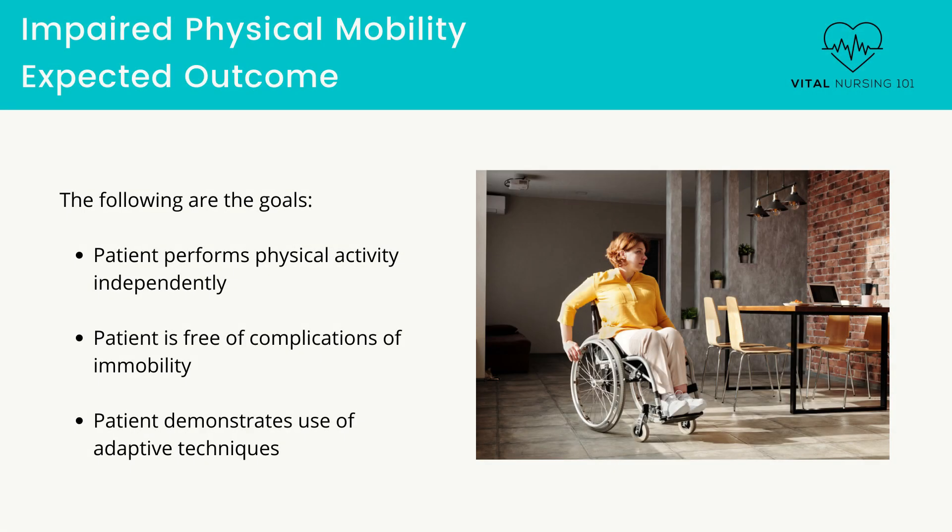What is our goal for the patient? The patient performs physical activity independently or within limits of amputation. The patient is free of complications of immobility, as evidenced by intact skin, absence of thrombophlebitis, normal bowel pattern, and clear breath sounds. The patient also demonstrates use of adaptive techniques that promote ambulation and transferring.